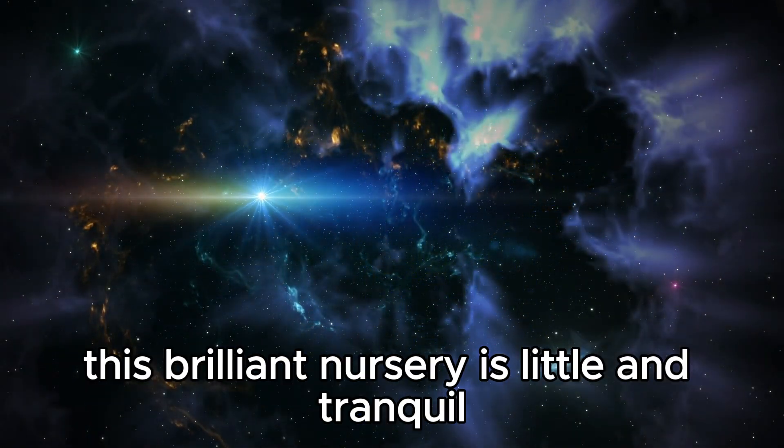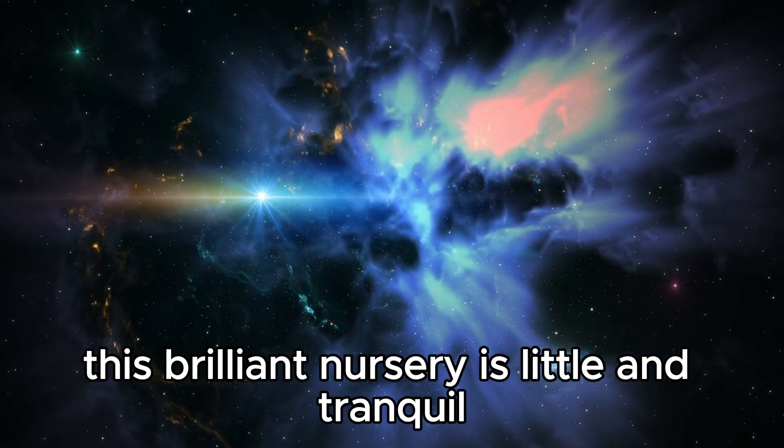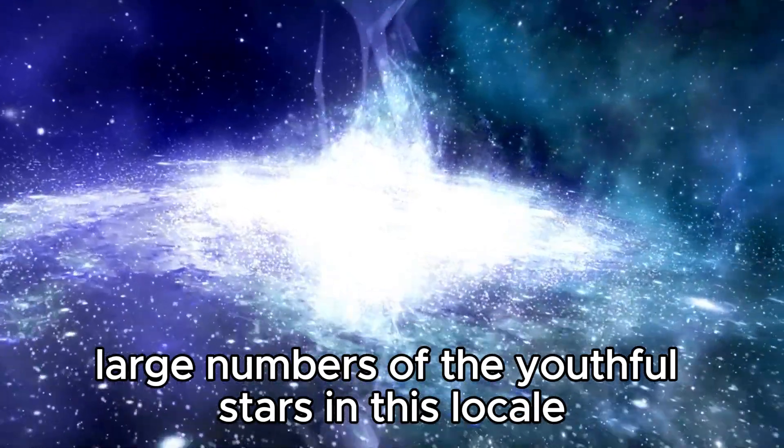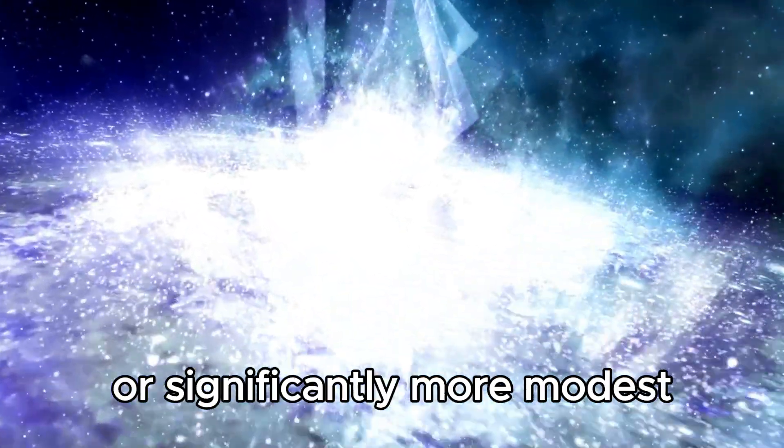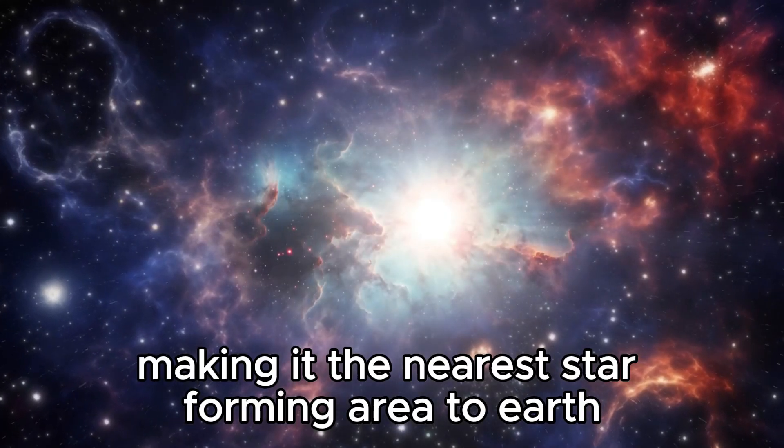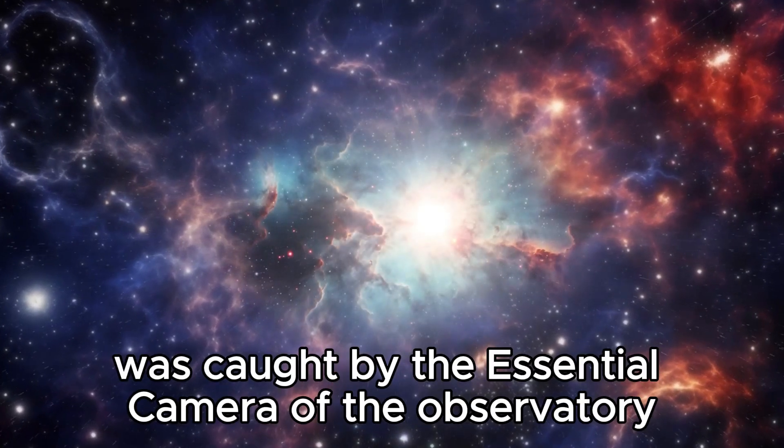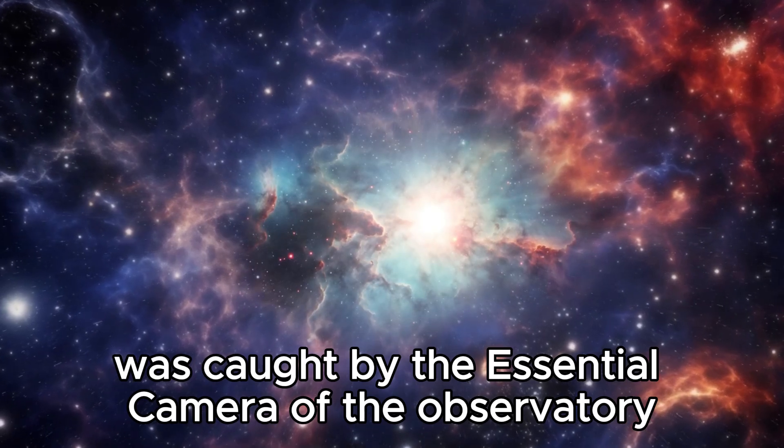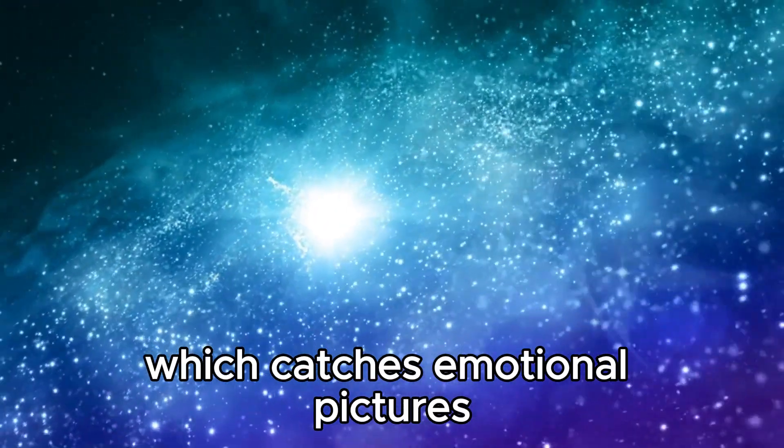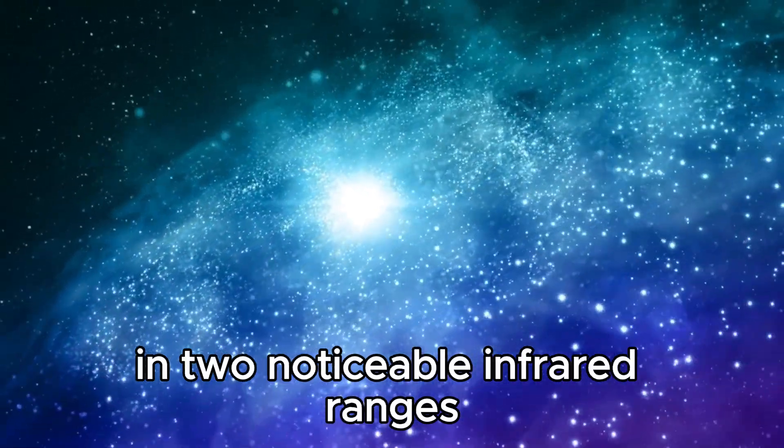According to NASA, this stellar nursery is small and tranquil compared to others. Many of the young stars in this region are about the size of our sun or smaller, making it the nearest star-forming area to Earth. This image was captured by the observatory's primary camera, the Webb Space Telescope's near-infrared camera, which captures dramatic pictures in two infrared ranges simultaneously.